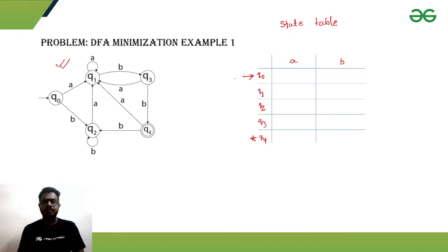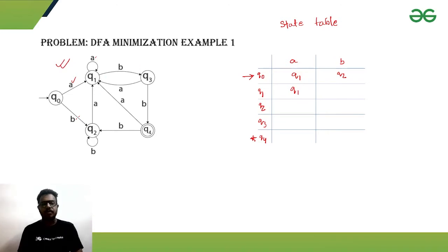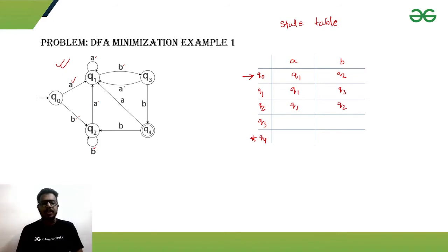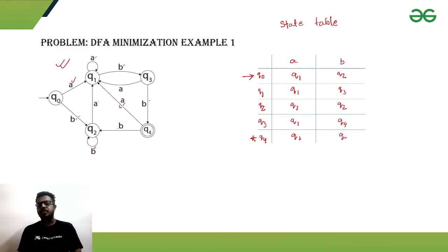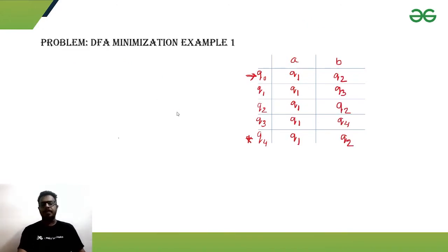Filling in the state table from the state diagram: q0 on a goes to q1, q0 on b goes to q2. q1 on a is a self-loop (q1), q1 on b goes to q3. q2 on a goes to q1, q2 on b is a self-loop (q2). q3 on a goes to q1, q3 on b goes to q4. q4 on a is not specified here, and q4 on b goes to q2. All edges are now defined.